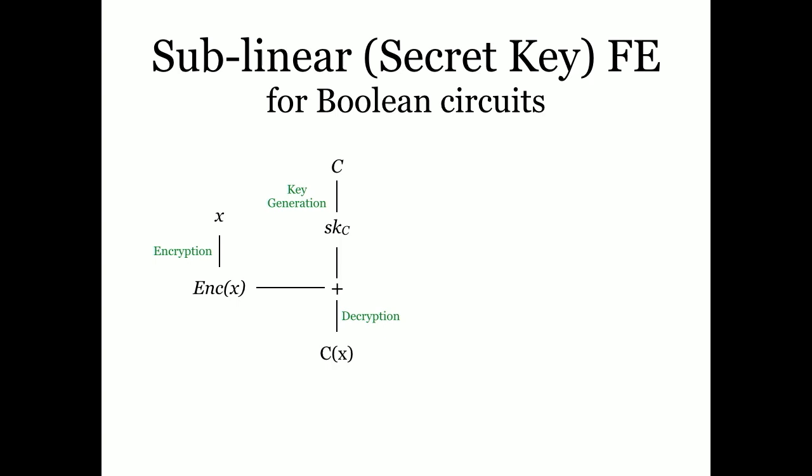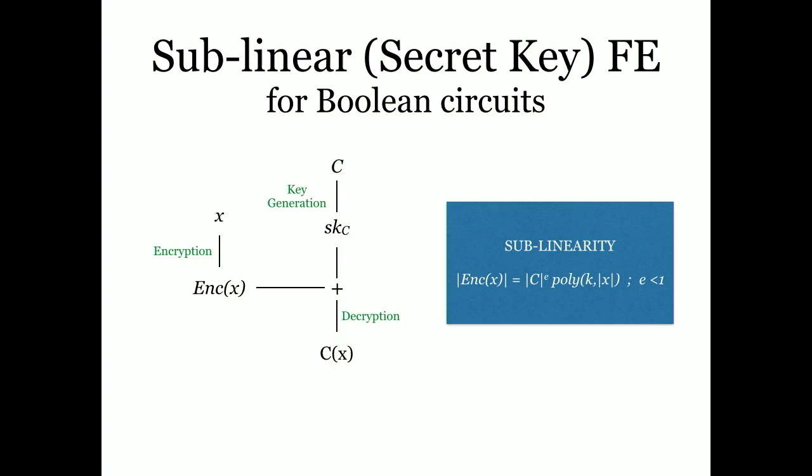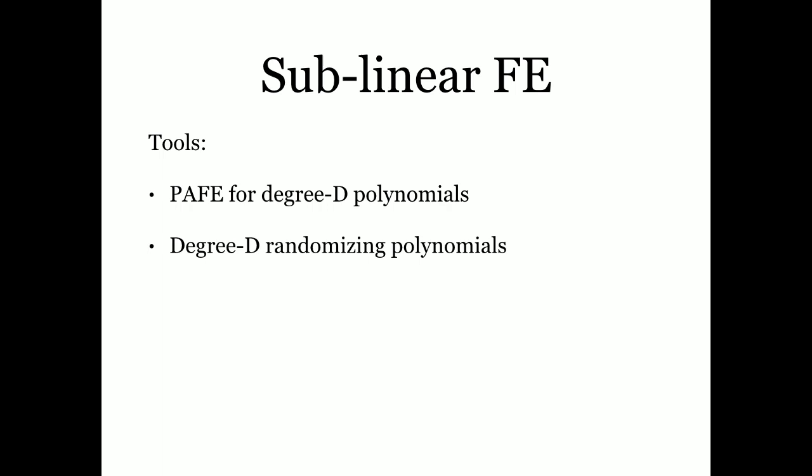Let me briefly recall what is sublinear secret key FE. There is an encryption and key generation algorithm such that if you combine a functional key associated with circuit C with the ciphertext, you obtain the output of the circuit in the clear. The efficiency property required is sublinearity: the encryption complexity should be sublinear in the size of the circuit for which you are issuing functional keys. Since we know sublinear FE implies IO, our task is to construct sublinear secret key FE using PAFE and randomizing polynomials.